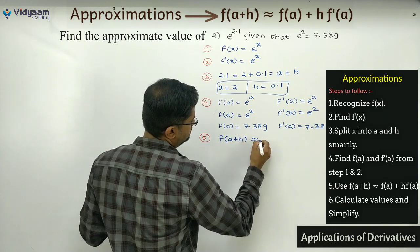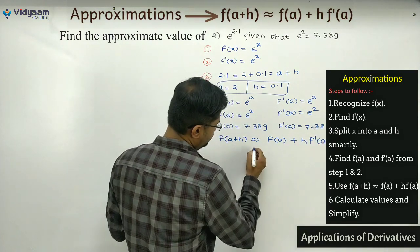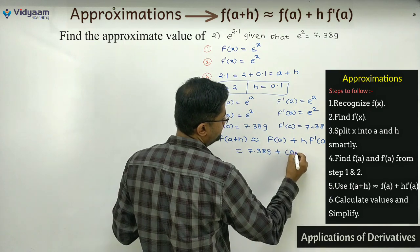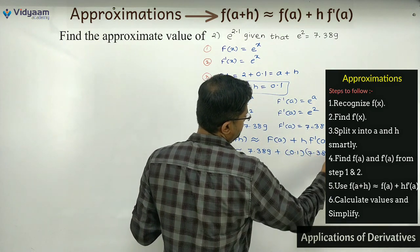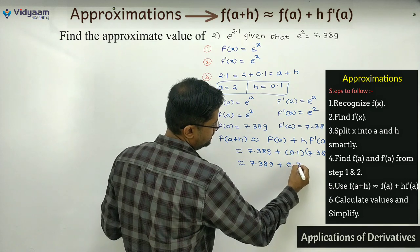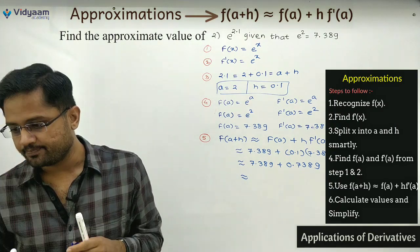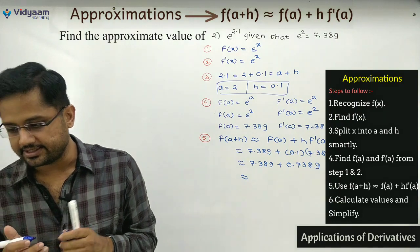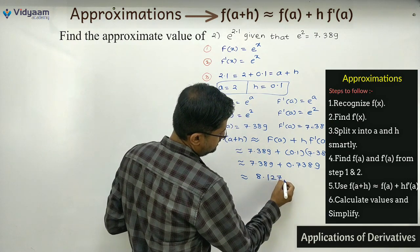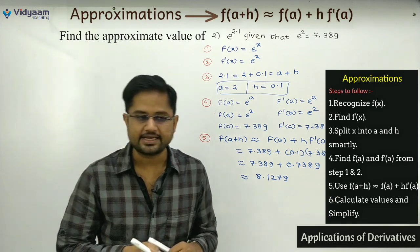Substituting: f(a) = 7.389, h = 0.1, f'(a) = 7.389. So we get 7.389 + 0.1 × 7.389 = 7.389 + 0.7389. If I add these two, my answer comes to approximately 8.1279.